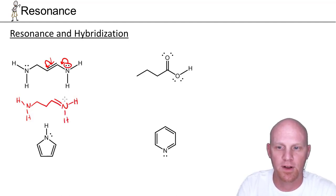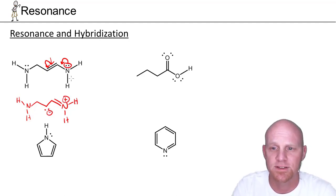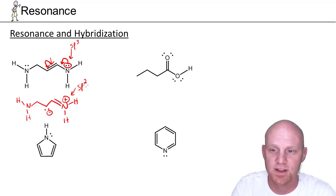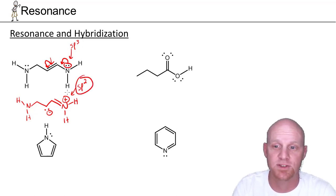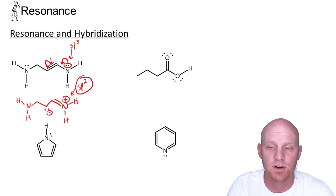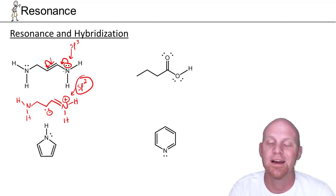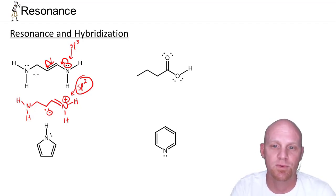We'd have a pi bond here, a positive formal charge on the nitrogen, and a lone pair of electrons with a negative formal charge on the carbon. So in the first structure the nitrogen appears to be sp3 hybridized, but in this structure it appears to be sp2 hybridized. Again, the key point is it's really sp2 hybridized. If a lone pair is on an atom that looks sp3 but you know there's going to be resonance with that lone pair, it's really sp2 hybridized, not sp3.